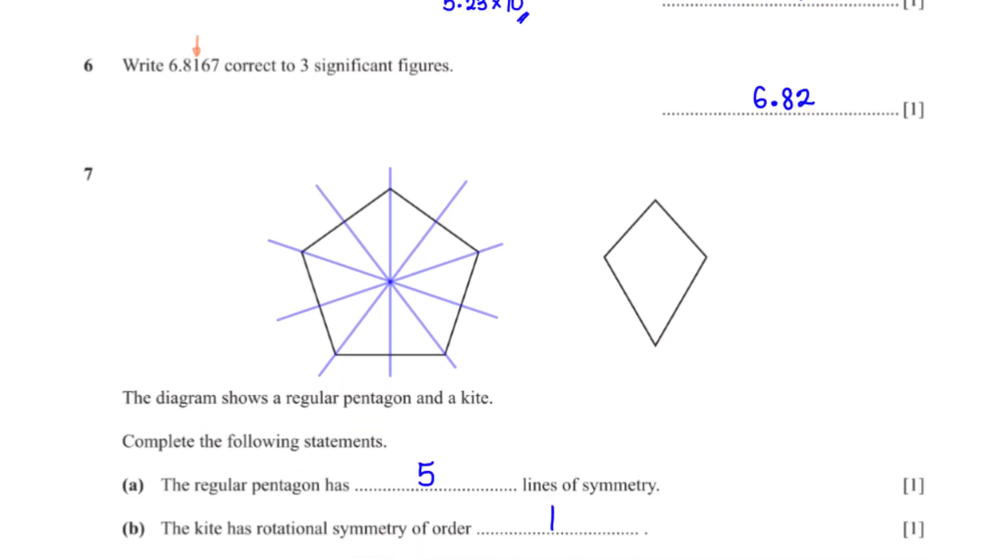The diagram shows a regular pentagon in a kite. Complete the following statements. The regular pentagon has blank lines of symmetry. A line of symmetry is a line that splits a shape into two mirror halves. Regular pentagons have 5 lines of symmetry. The kite has rotational symmetry of order blank. The order of rotational symmetry of a shape is the number of times the shape looks exactly like the original when it's rotated through 360 degrees. When a kite is rotated, it only looks like the original after it is rotated 360 degrees. So its order of rotational symmetry is 1.